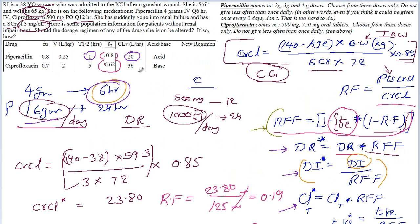In the next video, we are going to solve for Ciprofloxacin. We have to calculate a separate renal fudge factor because the fraction excreted is different for different drugs.